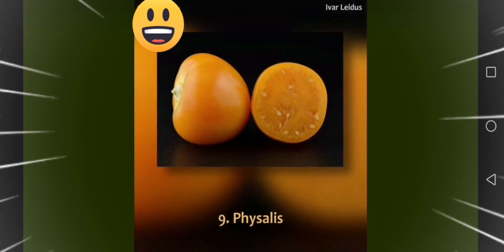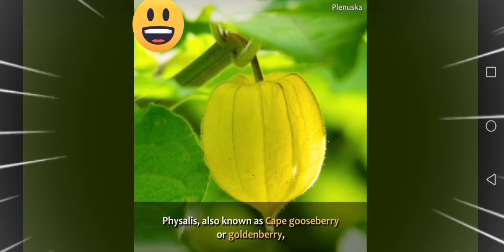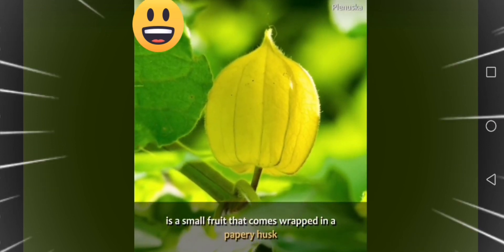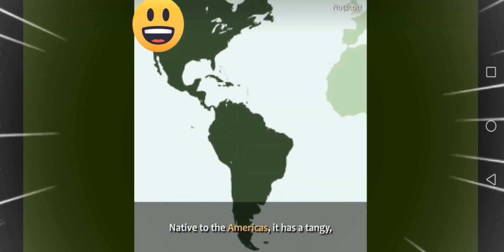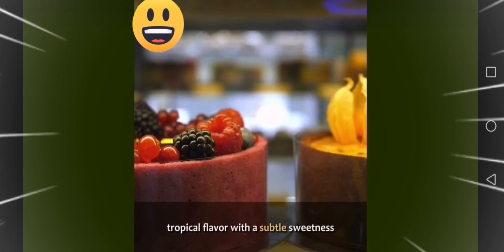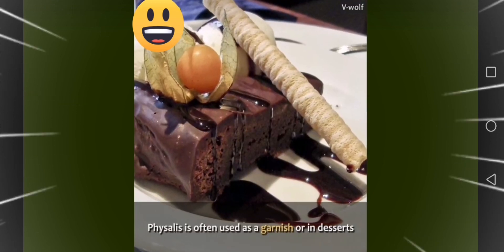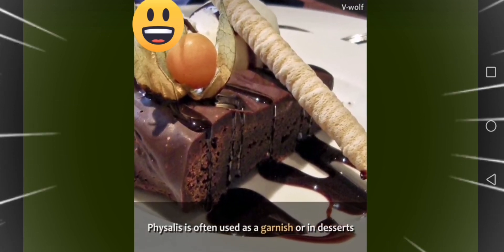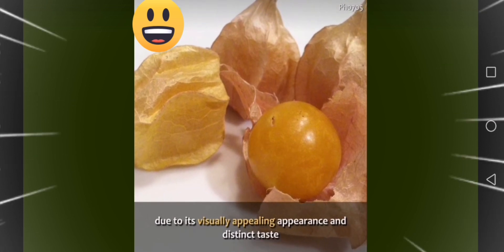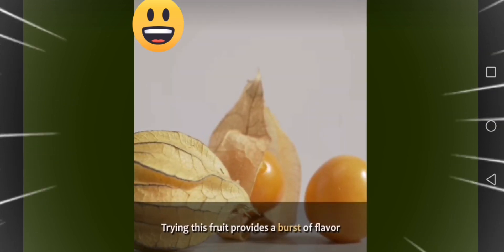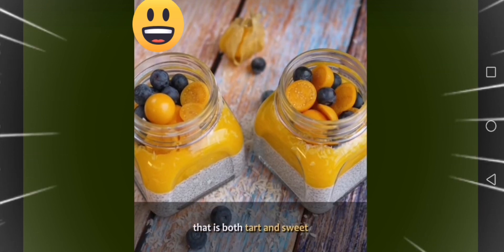Nine, physalis. Physalis, also known as cape gooseberry or goldenberry, is a small fruit that comes wrapped in a papery husk. Native to the Americas, it has a tangy, tropical flavor with a subtle sweetness. Physalis is often used as a garnish or in desserts due to its visually appealing appearance and distinct taste. Trying this fruit provides a burst of flavor that is both tart and sweet.